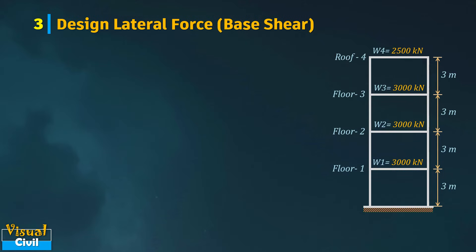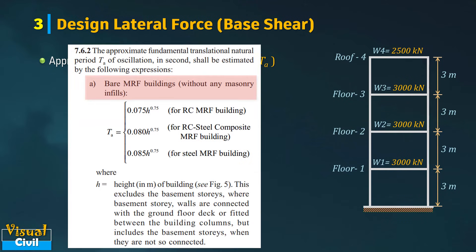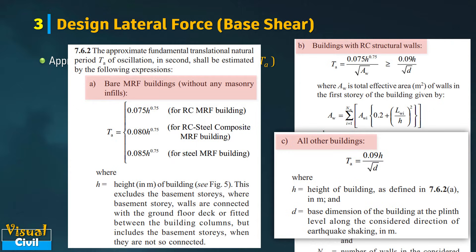The design lateral force or base shear will be calculated in step 3. First, let us compute the approximate fundamental natural period of the structure, Ta. Clause 7.6.2a specifies the expression to calculate this natural period for bare moment resisting frame buildings without any masonry infill. Section B gives the formulation for buildings with reinforced concrete structural walls, and section C covers all other remaining buildings.